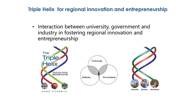Before discussing regional innovation entrepreneurship, I'd like to briefly introduce a concept. One popular concept to explain regional entrepreneurship and innovation development is called the triple helix. It basically means that in order for a region to become innovative and promote entrepreneurship, you need three sectors: industry, university, and government. Not only are these three sectors important, but their interaction — the overlap between different sectors — is where innovation can really take place.